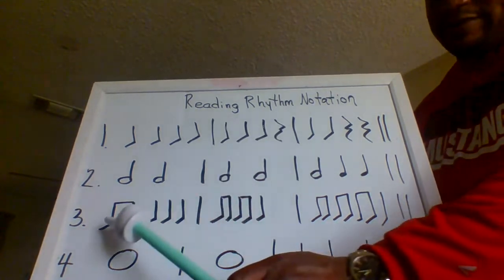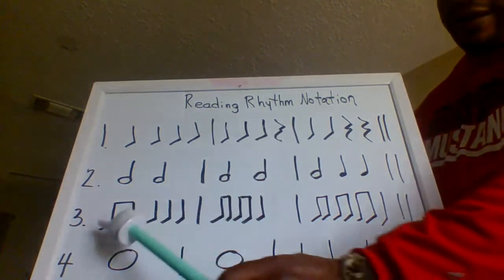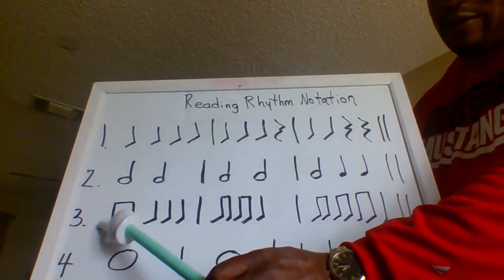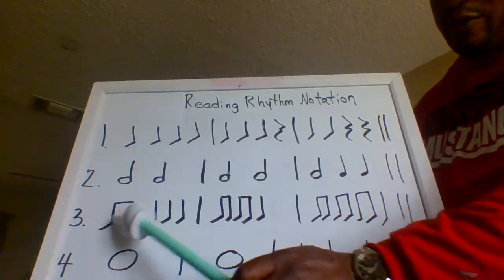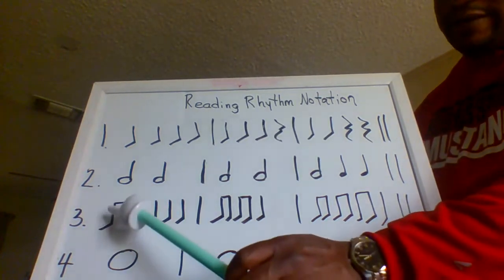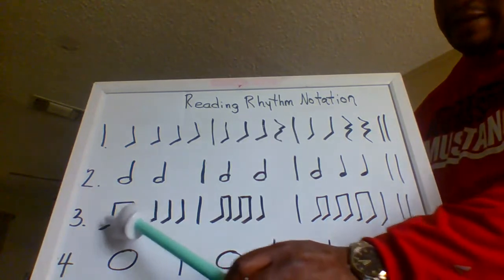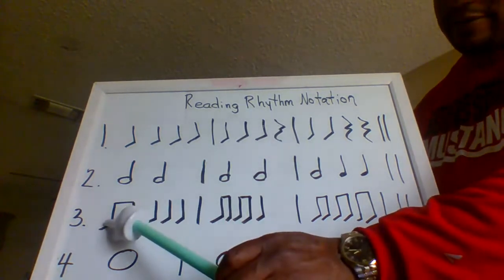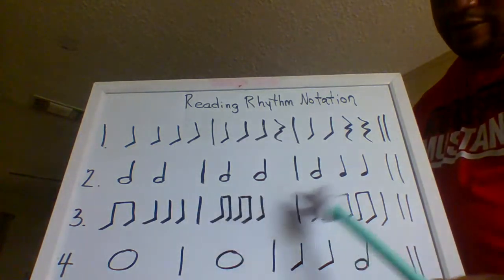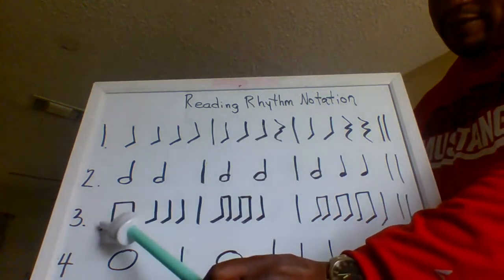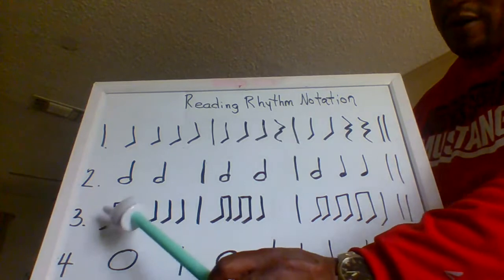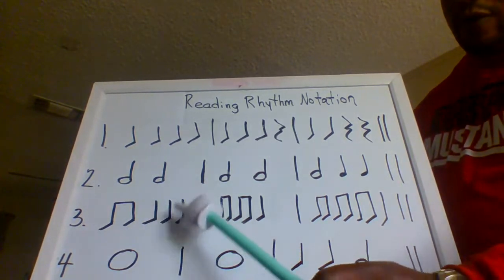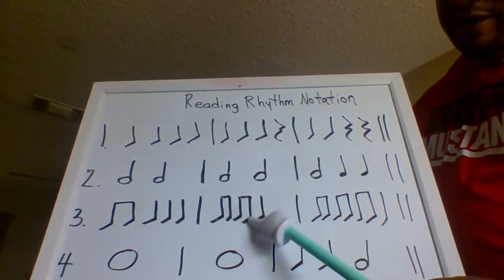Now we're adding eighth notes to the equation. Remember, the eighth note is counted as 'one-and,' where 'and' is added to whatever beat it falls on. We're going to have some eighth notes and quarter notes in this exercise. Line three — let's count: one-and, two, three, four, one-and, two-and, three, four, one-and, two-and, three-and, four.